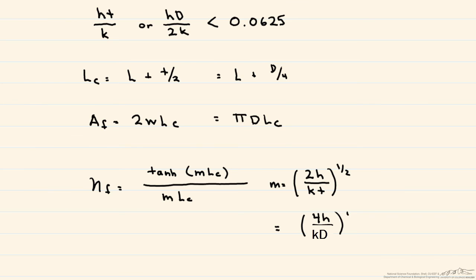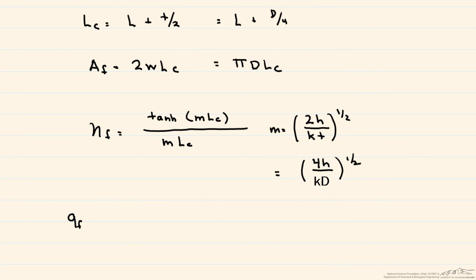So now we have our heat transfer from the fins, which is just equal to this N times this area of the fin, which we just found, times this efficiency, which we just found, times again our Tb minus T infinity. And so now what we have to do is find the heat transfer from the base.